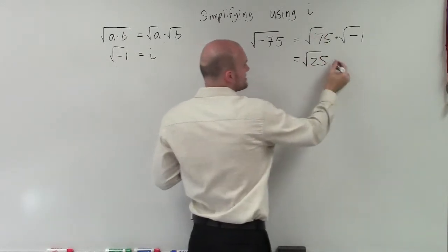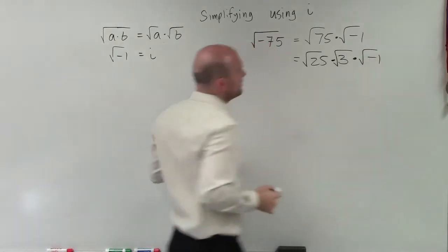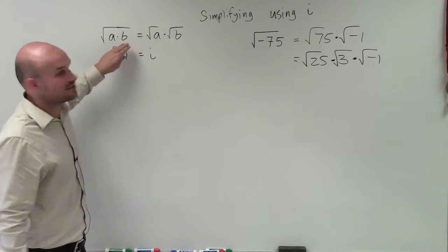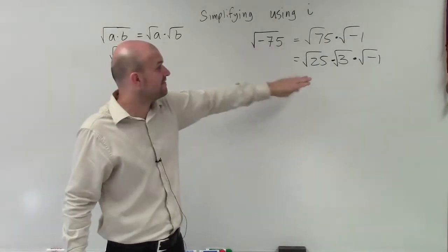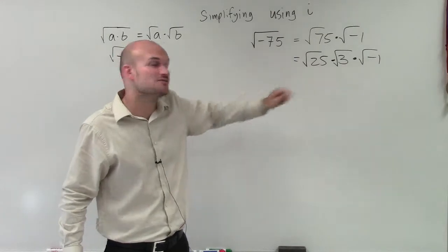And 25 divides into 75 three times, times negative 1. And if we multiply all these numbers back, we're still going to have our product under a radical. And it better equal negative 75, which this does. However, now what I can do is I can simplify each one of these roots.